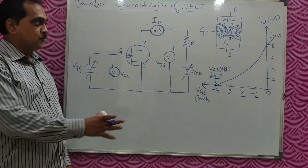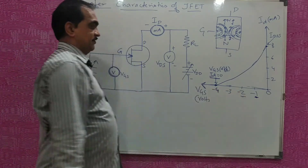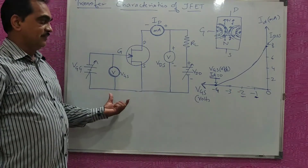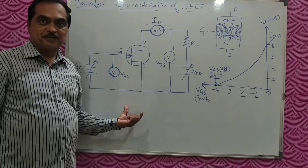So transfer characteristics is a relationship between input voltage and output current for a constant output voltage. This is how you show your transfer characteristics diagram.